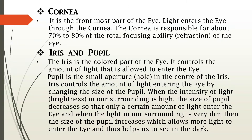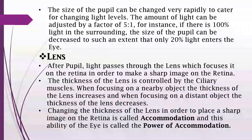Iris is the colored part of the eye and pupil is the small aperture in the center of the iris. Iris controls the amount of light entering the eye by changing the size of the pupil. Very bright light can damage the retina and we cannot see properly in very dim light. So in case of bright light the size of pupil decreases so that only sufficient amount of light enters the eye, and in case of dim light the size of pupil increases enabling us to see in dim light. If there is very bright light, the size of the pupil can decrease to such an extent that only 20% of light enters the eye.